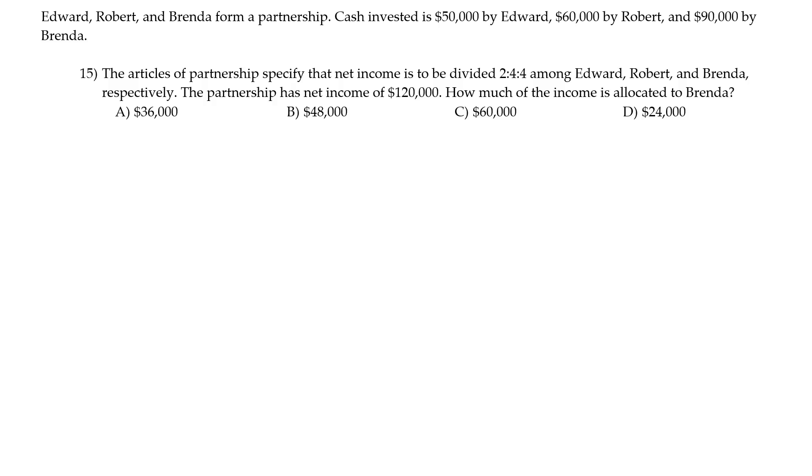In this example we have a partnership and the partners have earned some net income and we want to split that income based on the ratios that have been predetermined. So in this case the partnership has a net income of $120,000.